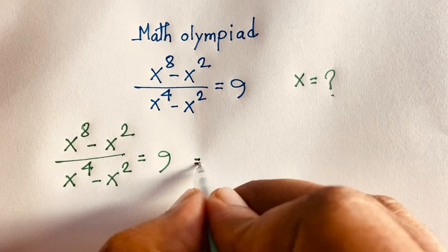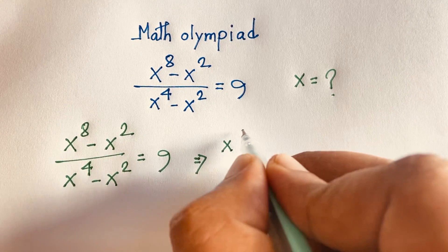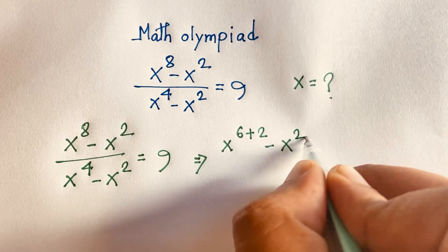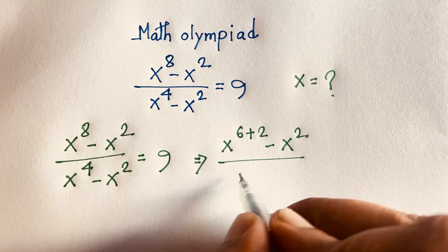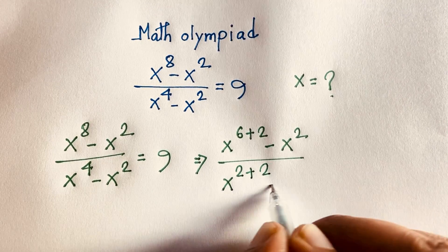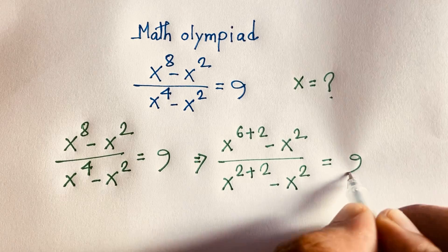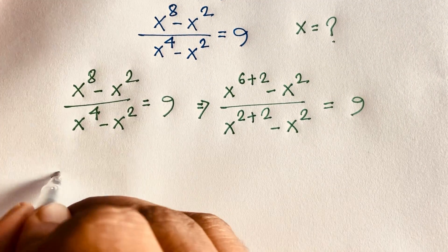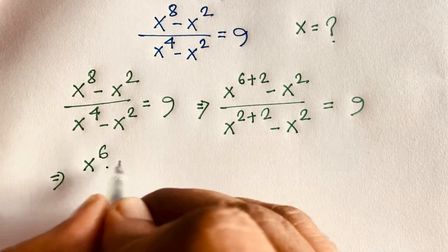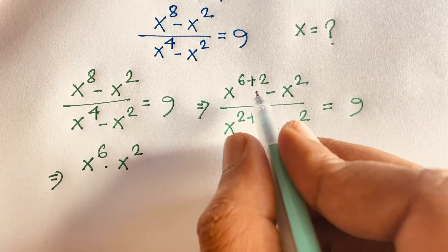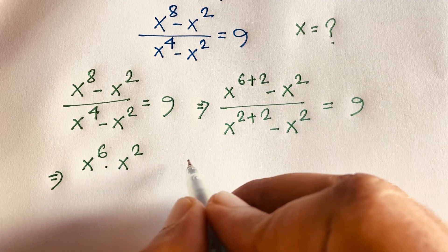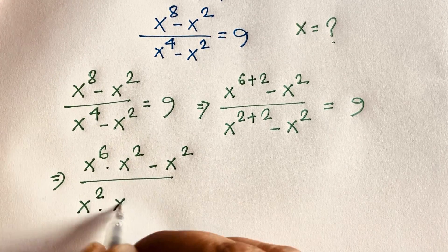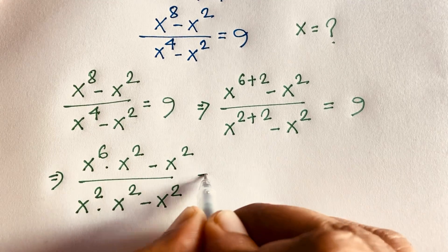Now I can see that here is x to the power 8, which will be x to the power 6 plus 2, and here is minus x to the power 2 over x to the power 2 plus 2 minus x to the power 2, equal to 9. This expression becomes x to the power 6 times x to the power 2, according to the exponential law: a to the power n plus m equals a to the power n times a to the power m. And here is minus x squared, over x squared times x squared minus x squared, is equal to 9.